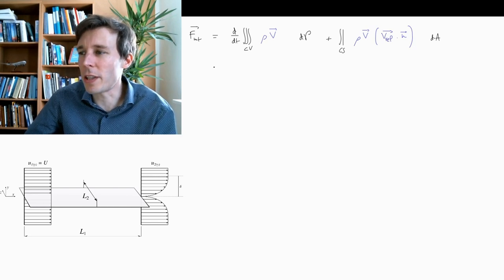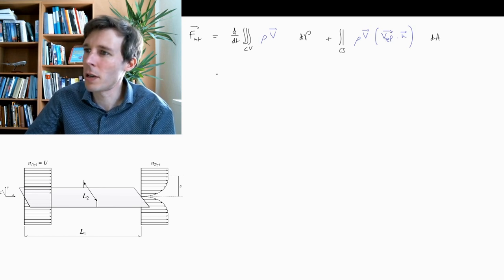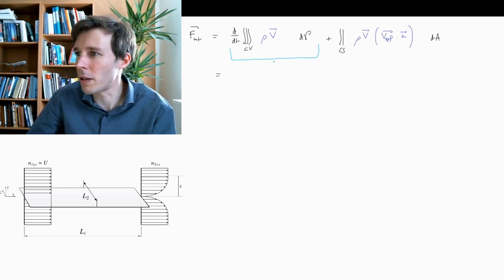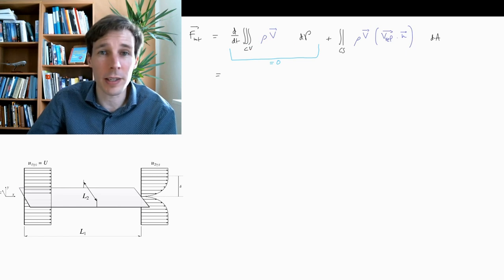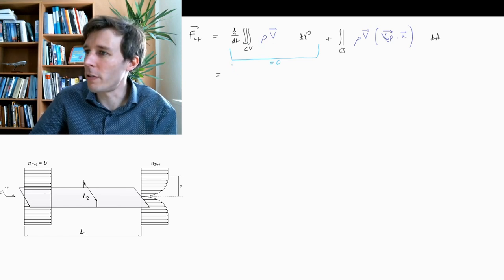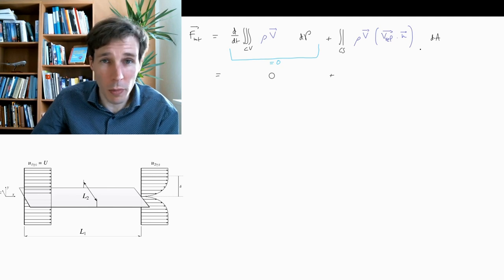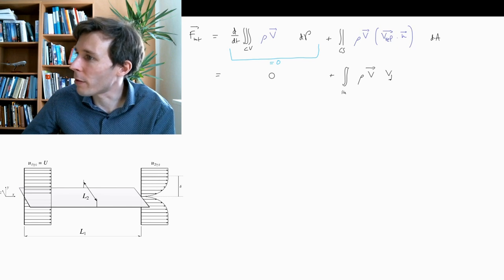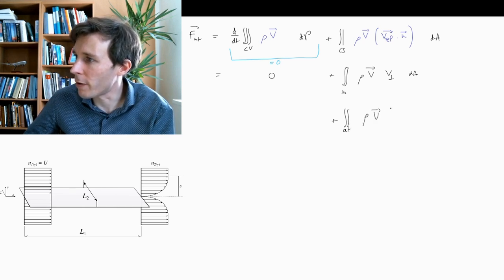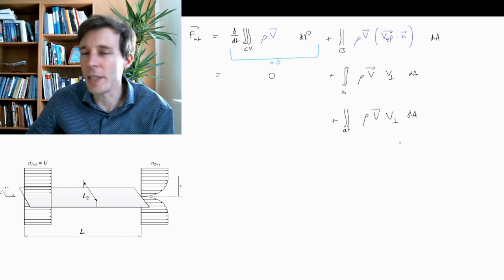This equation in our particular case will simplify quite a lot, due to two things. First, the time-derivative term is going to be zero because the flow is steady — any change in time is zero, so the first term goes to zero. The second term, when we split it into two components one for the inlet and one for the outlet, looks like this: rho times V times V_orthogonal dA for the inlet, plus rho times V times V_orthogonal dA for the outlet.